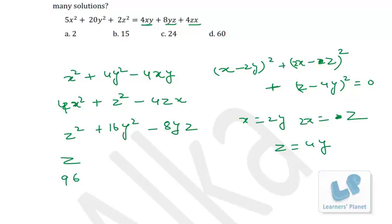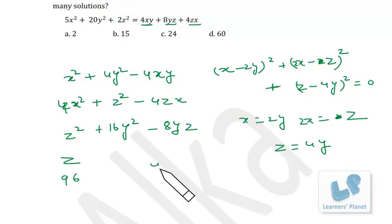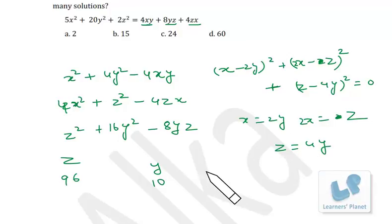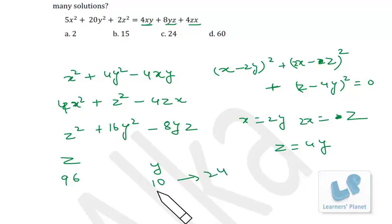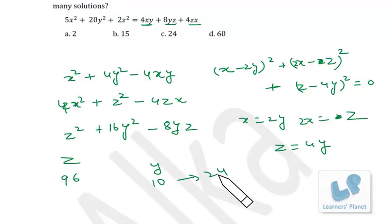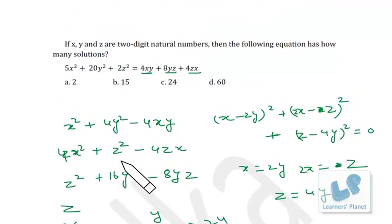Since X = 2Y and Z = 4Y, Y is the smallest. The minimum value of Y is 10 (to keep Y two-digit) and the maximum is 24 (since Z = 4×24 = 96). So Y ranges from 10 to 24, giving 15 values of Y, and correspondingly 15 values each of X and Z. The answer is 15.